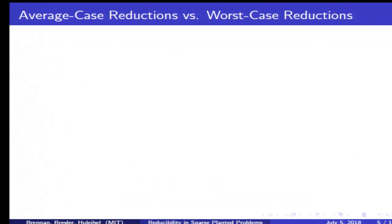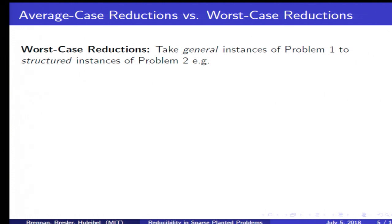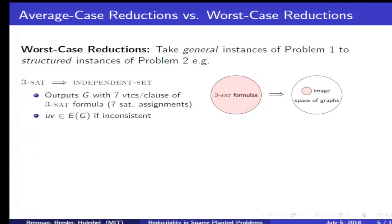This notion of average case reduction has some technical challenges that aren't present in worst case reductions. In worst case reductions, you generally take a general instance of a first problem to a very structured instance of a second problem. For example, in a canonical reduction from 3SAT to independent set, we take a 3SAT formula and construct a graph with seven vertices per clause, each corresponding to the seven possible satisfying assignments for the three variables in each clause. We connect two vertices if they correspond to an inconsistent assignment. A large independent set corresponds to some assignment satisfying all the clauses. If you think about the space of all 3SAT formulas, we're mapping that to a very small image within the set of graphs, just these ones with this particular structure.